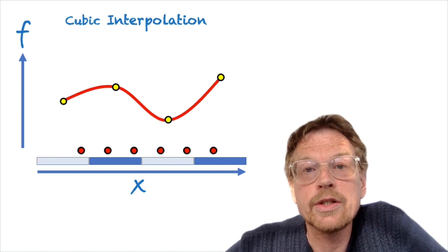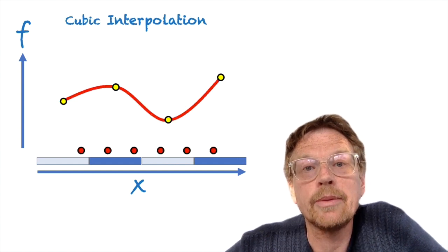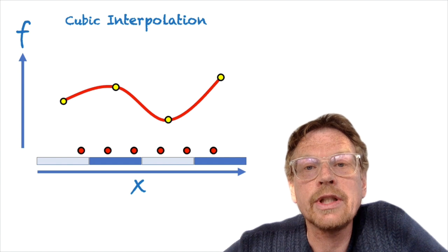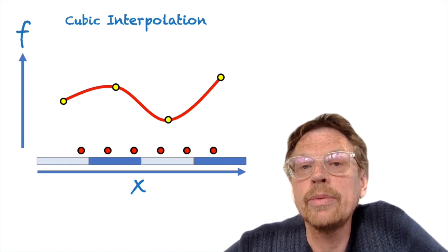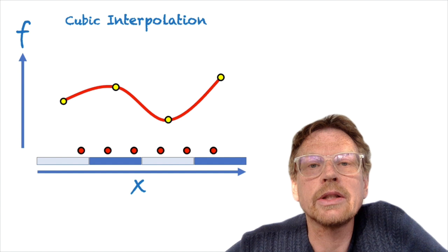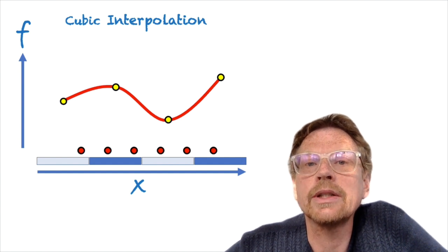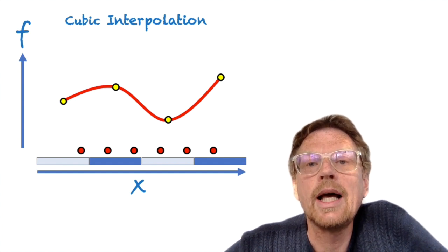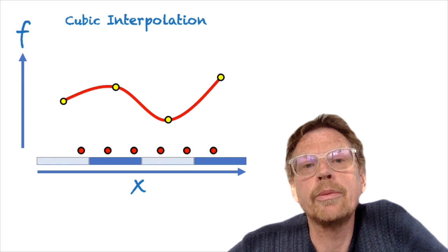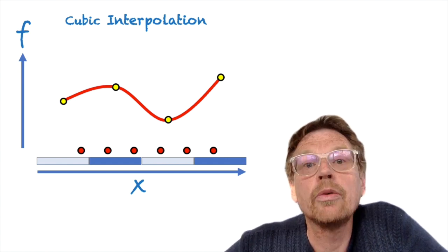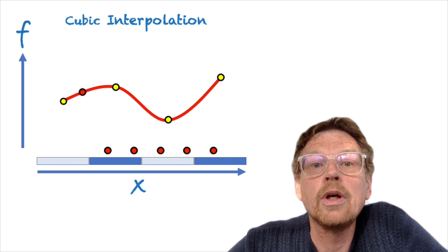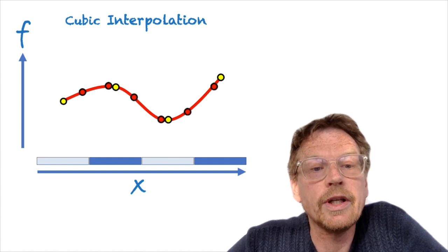The third method is called cubic interpolation. Rather than just fitting a straight line between neighboring points, cubic interpolation takes four points from the original dataset and fits a power-three cubic polynomial through those points, so that we're going to have a smoother interpolation when we do the remapping.